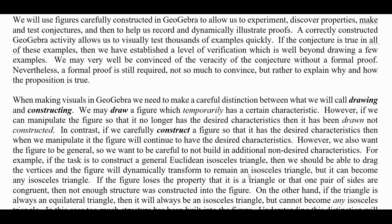We will use figures carefully constructed in GeoGebra to allow us to experiment, discover properties, make and test conjectures, and then help us record and dynamically illustrate proofs. A correctly constructed GeoGebra activity allows us to visually test thousands of examples very quickly. If the conjecture is true in all of these examples, then we would have established a level of verification that is well beyond drawing a few examples. We may very well be convinced of the veracity of the conjecture — convinced that it's true — without a formal proof.